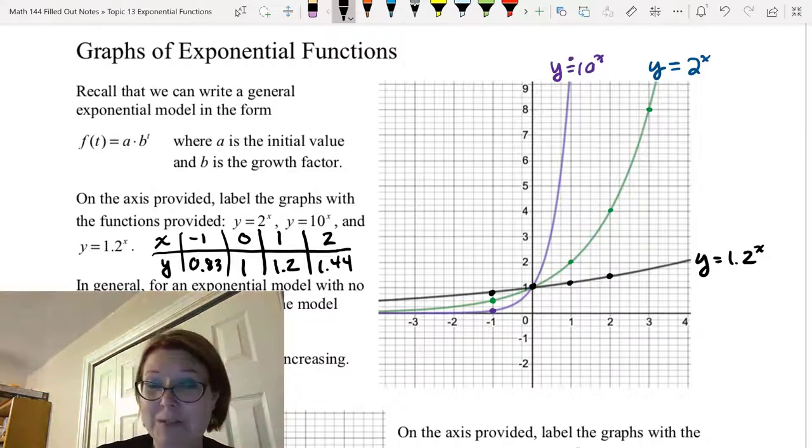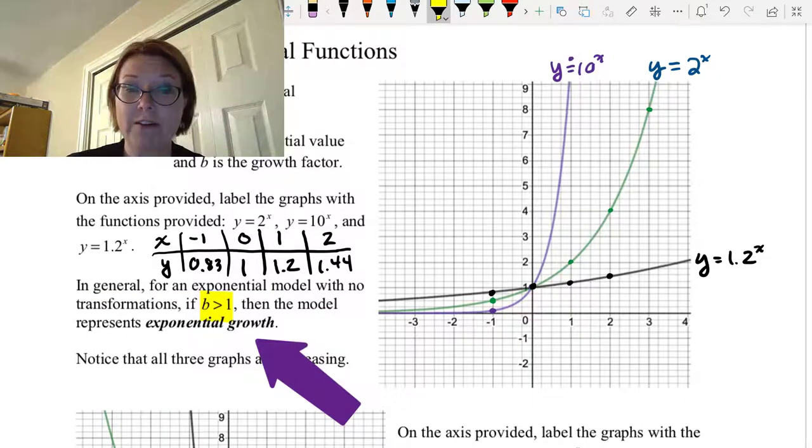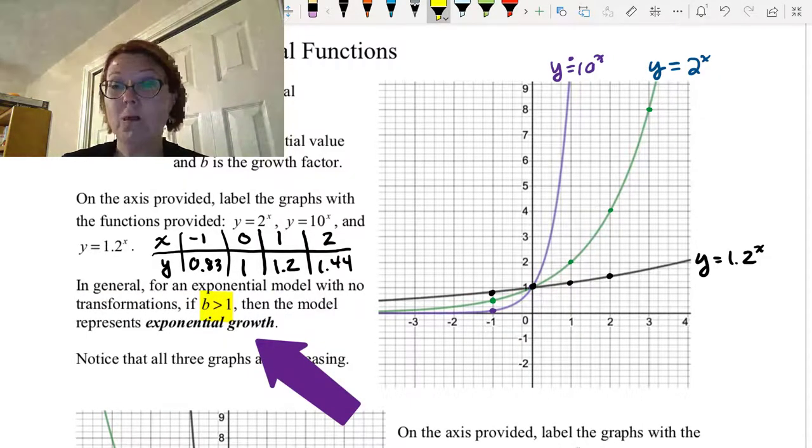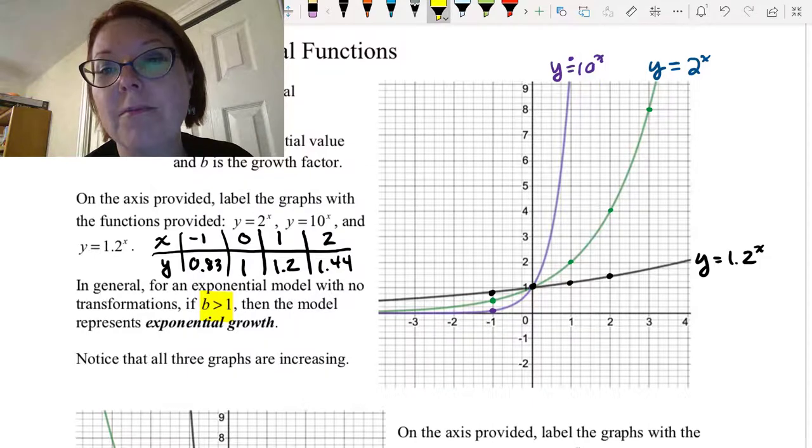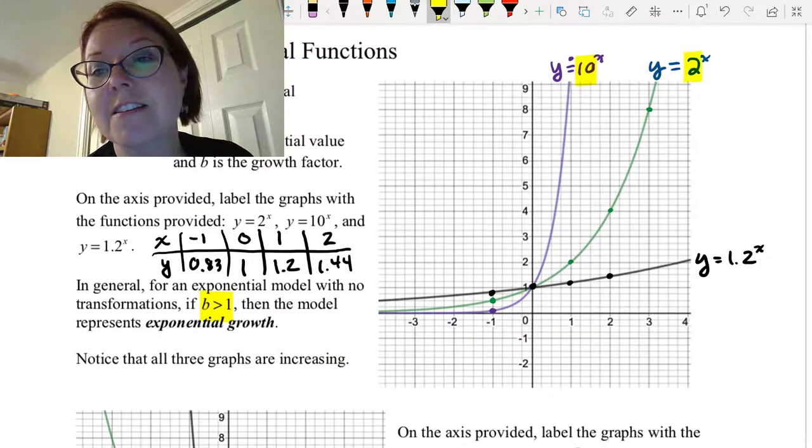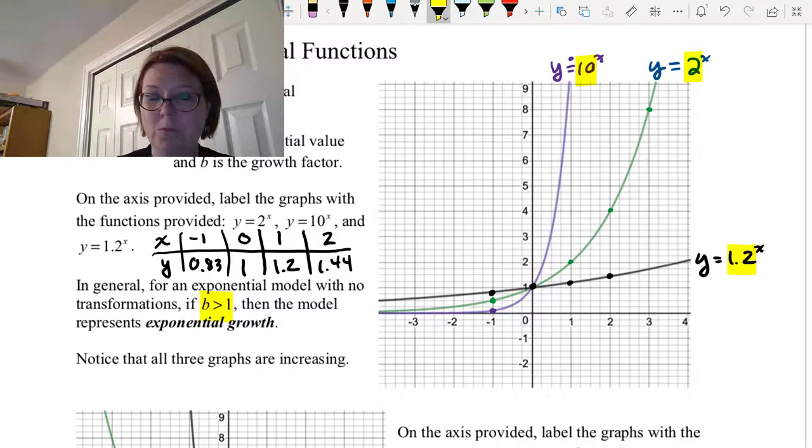Now in general for an exponential model, if we have no transformations, then if b is greater than 1, if the base is greater than 1, then the model will represent exponential growth. So all three of these represent exponential growth. In all three of these, 10 to the x, 2 to the x, and 1.2 to the x, the b value is greater than 1.